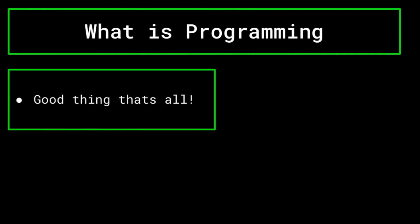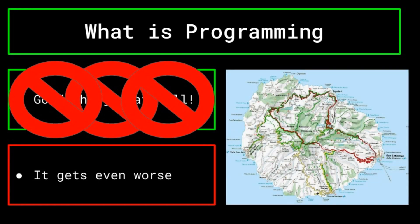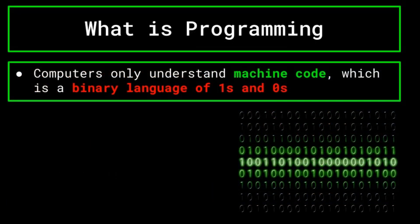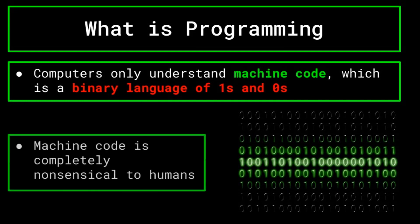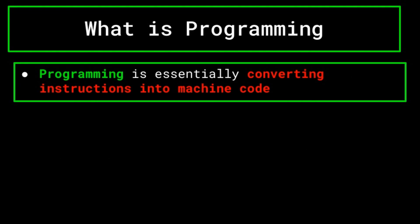I know this sounds really annoying. Well, luckily for you, it gets worse. On top of everything else, your friend only speaks Gilbo Samaro, the whistling language of La Gomera Island. In a computer's case, the computer only understands machine code, which is a binary language of ones and zeros that is completely nonsensical to humans. Programming is essentially converting how you would like the computer to carry out a task into machine code that the computer can understand.